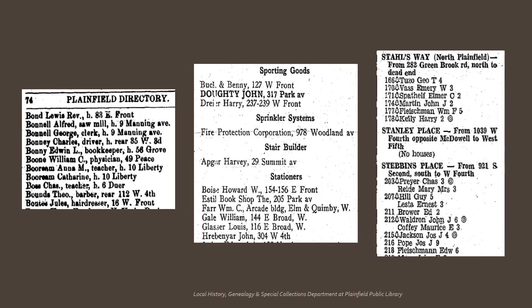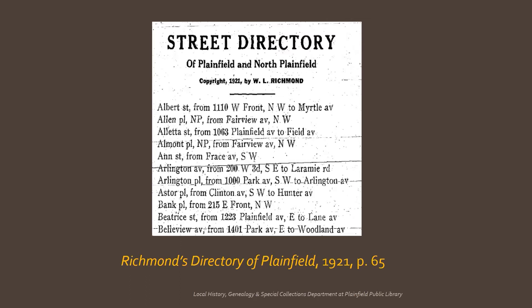The residential section lists residents and some businesses in alphabetical order. A classified section lists businesses by categories. And starting in 1929 for Plainfield, a geographical section is arranged by address and gives the residents' names. Before 1929, there's usually a simple street directory. Start and end points can help you to discover where a street could be found.